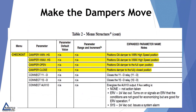The Honeywell Jade Controller has a checkout menu where you can open and close the dampers to their maximum and minimum position. Most inspectors, when they're inspecting an economizer, just want to see the damper blades move.